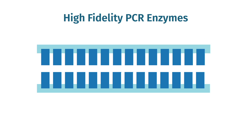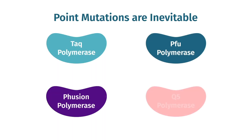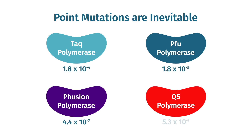Proofreading requires exonuclease activity. High exonuclease activity can inhibit priming and slow processivity, resulting in slower PCR reactions with lower yields. Regardless, even with the highest fidelity PCR enzymes, you risk introducing point mutations. This is why cloned PCR products must always be sequenced.